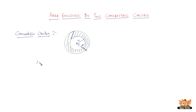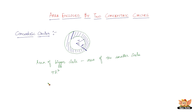The area enclosed equals the area of the bigger circle minus the area of the smaller circle. The area of the bigger circle is pi capital R squared, because the radius of the bigger circle is capital R, minus pi small r squared, because the radius of the smaller circle is small r.